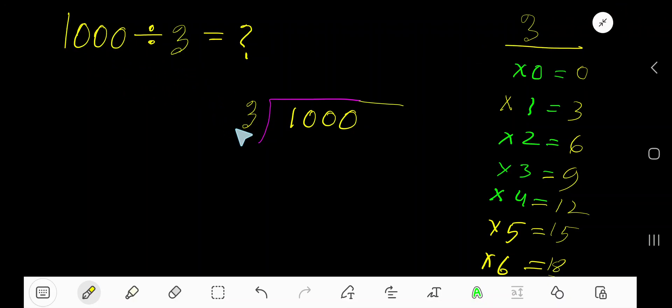1,000 divided by 3. Here 3 is a divisor, so we need the multiplication table of 3. 3 times 0 is 0, 3 times 1 is 3, 3 times 2 is 6, 3 times 3 is 9. To find out the multiplication table of 3 easily, just add 3 with the previous step: 0 plus 3 is 3, 3 plus 3 is 6, 6 plus 3 is 9.